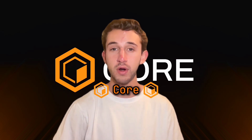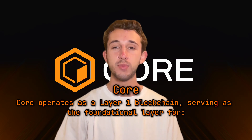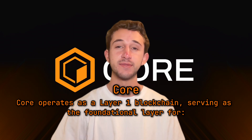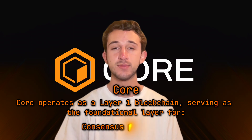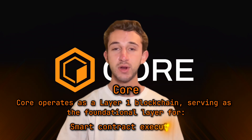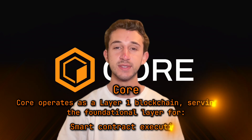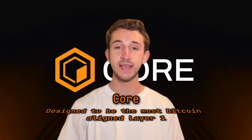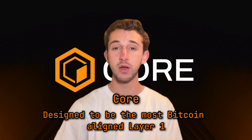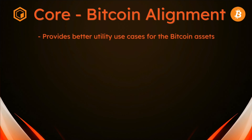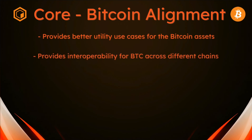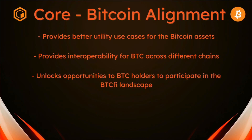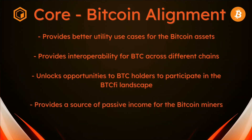A little bit about Core — is it an L1 or an L2? Core operates as a layer 1 blockchain, serving as the foundational layer for consensus mechanism, transaction processing, and smart contract execution within its ecosystem. However, it's designed to be the most Bitcoin-aligned layer 1, providing better utility cases for Bitcoin assets, interoperability for Bitcoin across different chains, opportunities for Bitcoin holders to participate in the BTCFi landscape, and a source of passive income for Bitcoin miners.